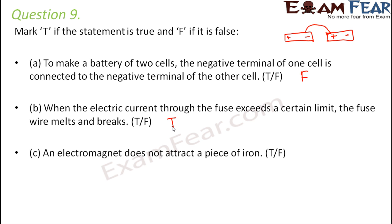An electromagnet does not attract a piece of iron. This is again false because electromagnet, the moment electricity passes through the electromagnet, it produces magnetic field and iron piece will be attracted by the magnetic field. So, electromagnet also behaves like a magnet and therefore it attracts a piece of iron.